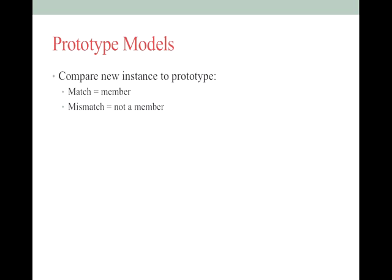How do I determine if a new thing is a category member based on the prototype model? I compare: here's my prototype, here's the new thing — do they match? It doesn't get into the matching process in detail — that's where feature comparison theory comes in. But you either say yes, they match, it's a member, or no, they don't match, it's not a member. It's a comparison of the prototype to the new thing you're seeing.